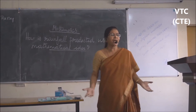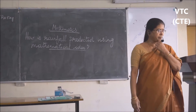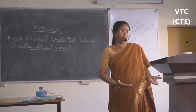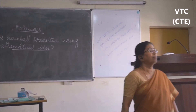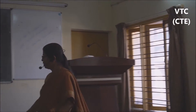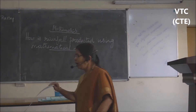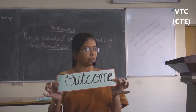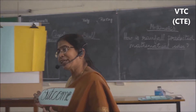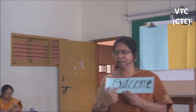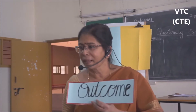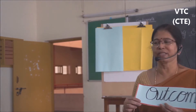In science labs, you would have conducted many experiments. After the experiment, what do you get? We get results. The result is also called outcome. Where else do you get results? When exams are written, we get results. What is the other word used for results? Outcome. So we use the word outcome.